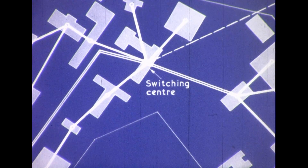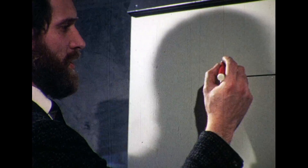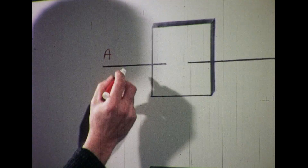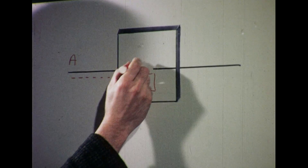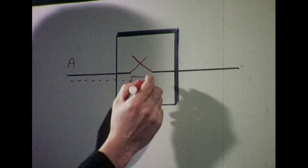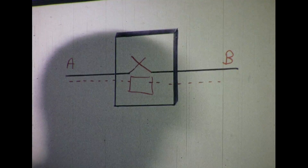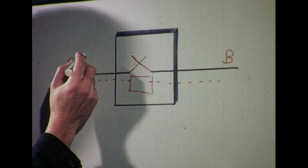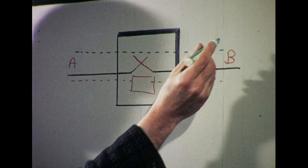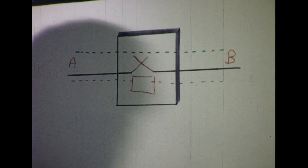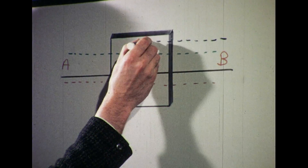The principle of packet switching differs from that of circuit switching used in the ordinary telephone network. With circuit switching, a subscriber A calls an exchange and requests a connection to a subscriber B. After checking that B is available, the network sets up a circuit through which the information is exchanged. The direct connection is maintained throughout the call, and A and B must communicate at the same rate. This is done by agreement between them and does not concern the network.